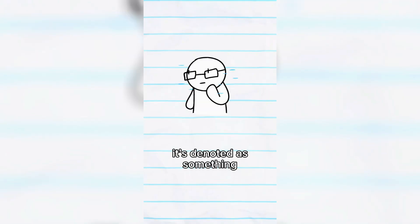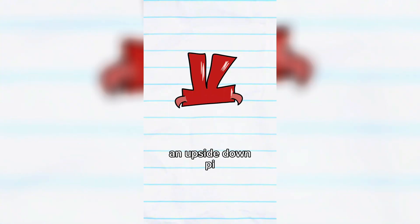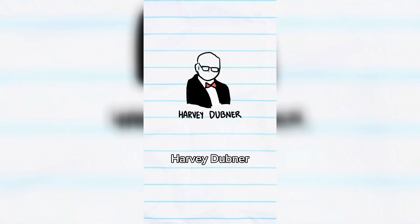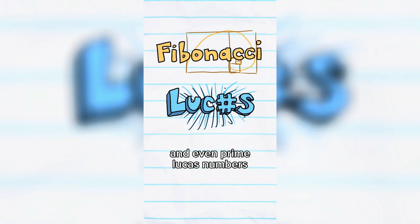And finally, as if this number couldn't get any worse, it's denoted as something even more cursed, an upside-down pi. Why? Well, I guess you have to ask Harvey Dubner, who by the way found other super weird prime numbers like the Fibonacci primes and even prime Lucas numbers.